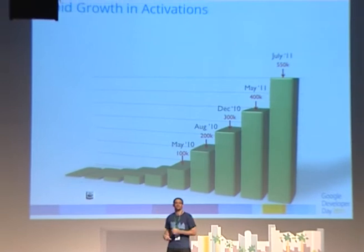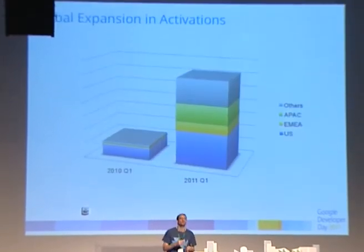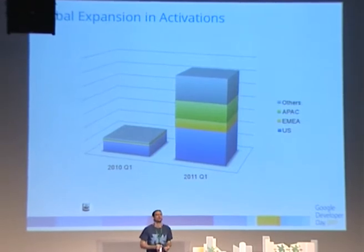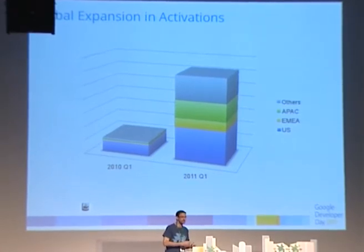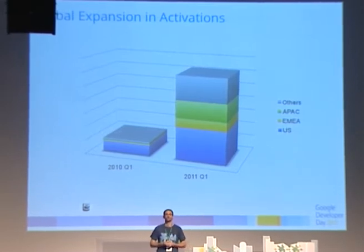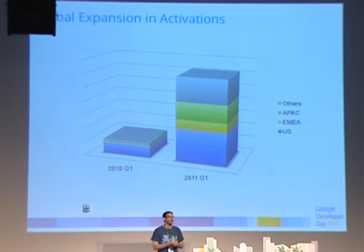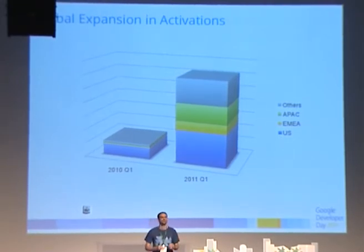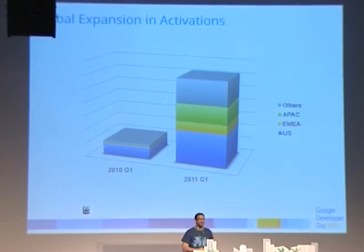We've seen the rate of activations has been growing as well, and not only that — the reach across the world. At the start of last year, America had more than 75% of the Android market, along with those Verizon Droid campaigns running during the Super Bowl. And now you can see America's less than 40% of the global market. That's a good shift for us, a good shift for all of us in Europe, Middle East, Africa, Russia — the places where Android is now shipping in more and more volumes.